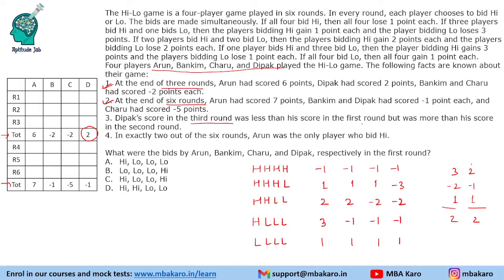Since Deepak's third-round score is less than his first-round score but more than his second-round score, the second round has the least score and the first round has the highest. Taking the first case where Deepak gets three in Round 1: if he gets three points, the others each get minus one. But Arun scored six points total, and if he gets minus one in Round 1, he cannot make seven points in just two rounds since the maximum per round is three. So this assumption is wrong.